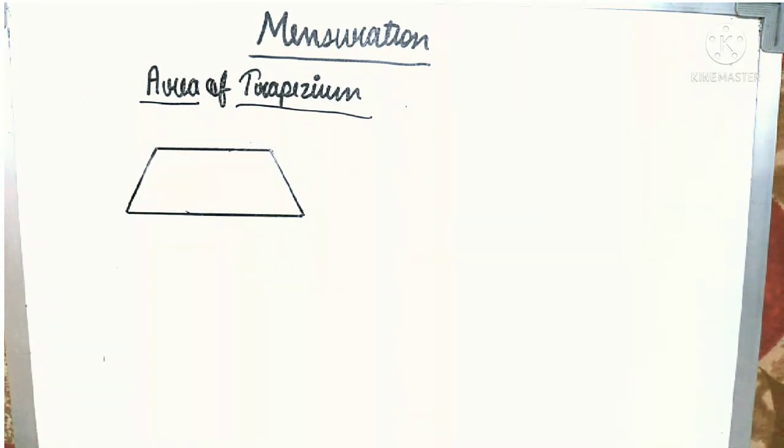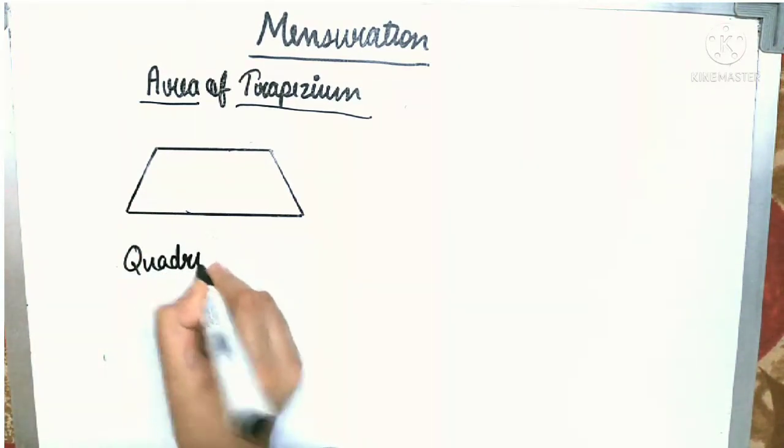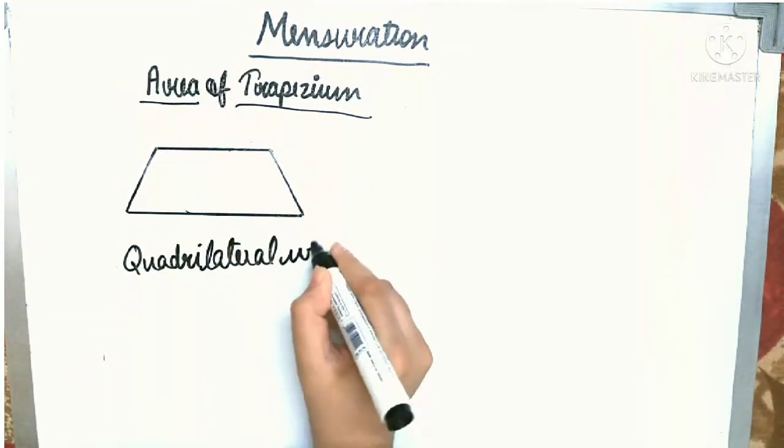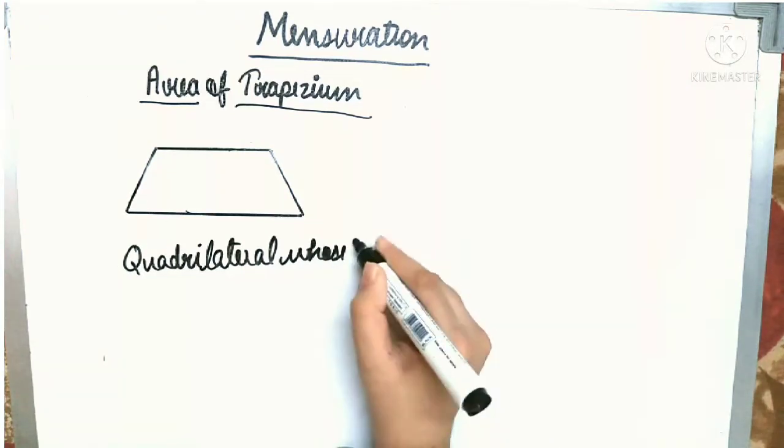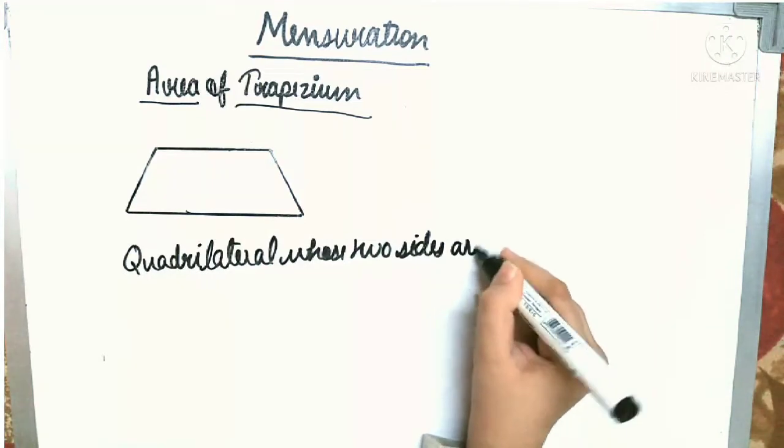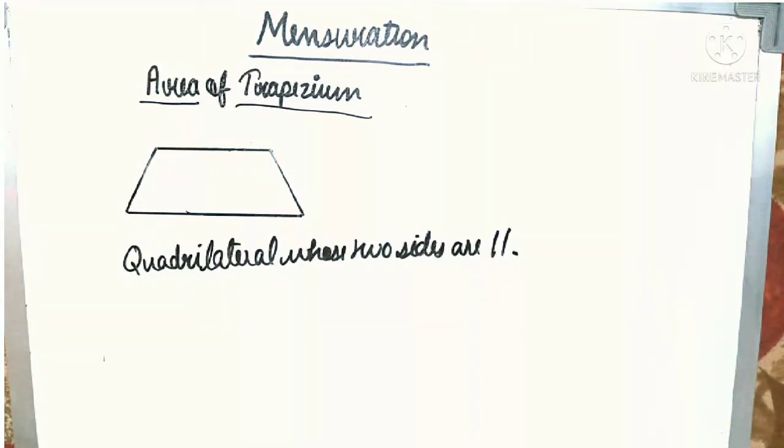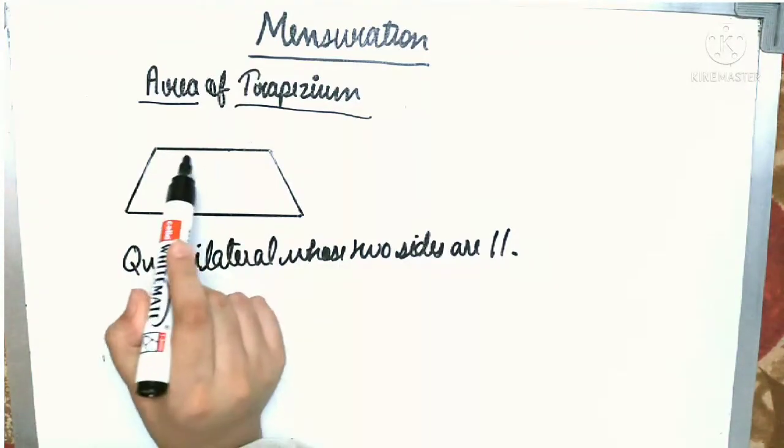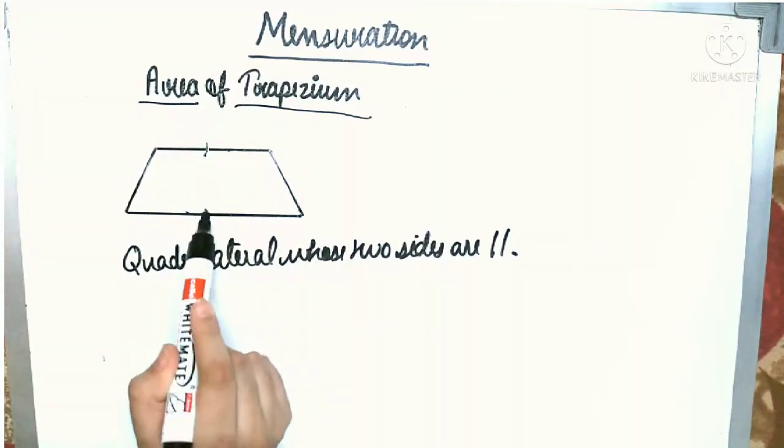Trapezium is a quadrilateral whose two sides are parallel. See, I have made a trapezium to show you. Here, this side is parallel to this side.